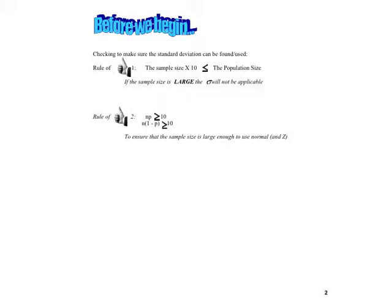Rule of thumb 2 is extremely important. Rule of thumb 2 has two parts: n times p needs to be greater than or equal to 10, and n times 1 minus p needs to be greater than or equal to 10. This is essentially to ensure that our sample size is large enough so we actually can use a normal approximation. If these two things are true, then I can go ahead and use normal CDF, and you're good to go.